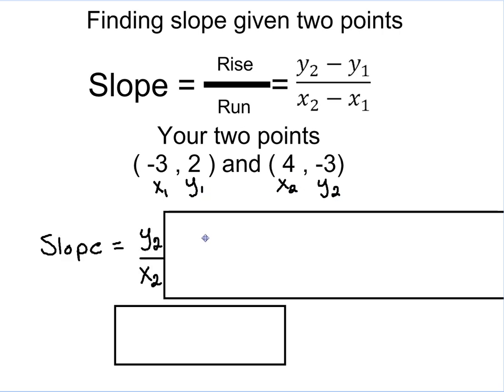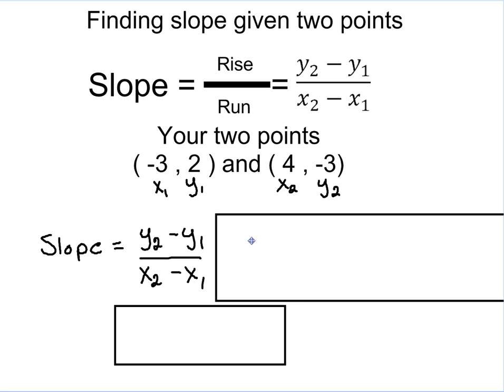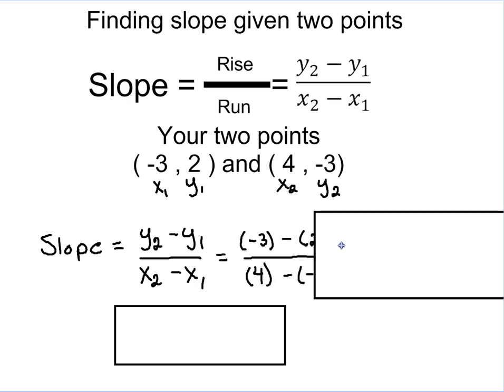Now that we've got them labeled, we're going to write down our equation. It's a good habit to get into writing the equations down before you plug things in. This way, you're clear on the formula and you can see immediately on your paper where you're plugging in the numbers. So we're going to plug in those numbers. So we have negative 3 minus 2 and 4 minus a negative 3.